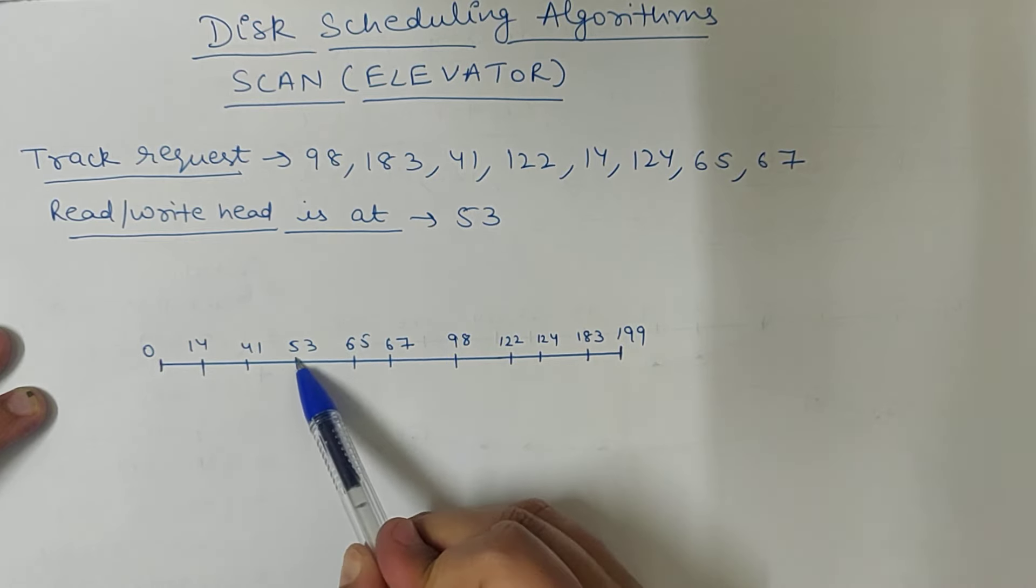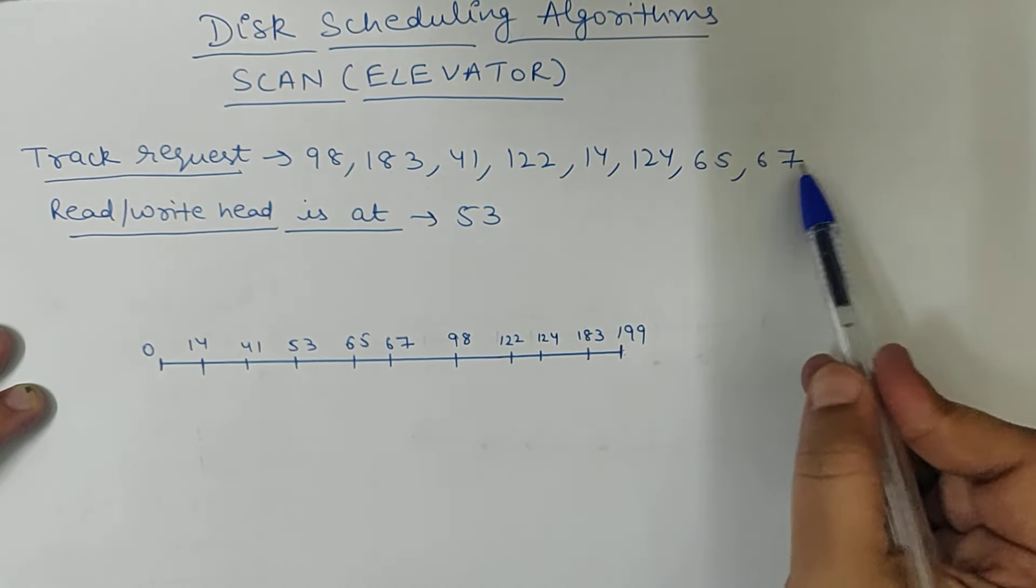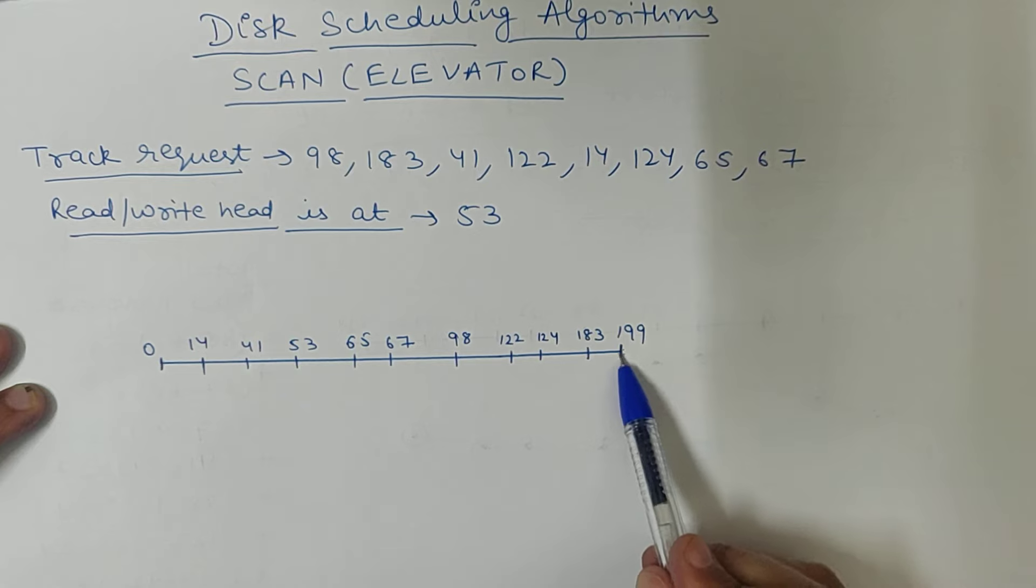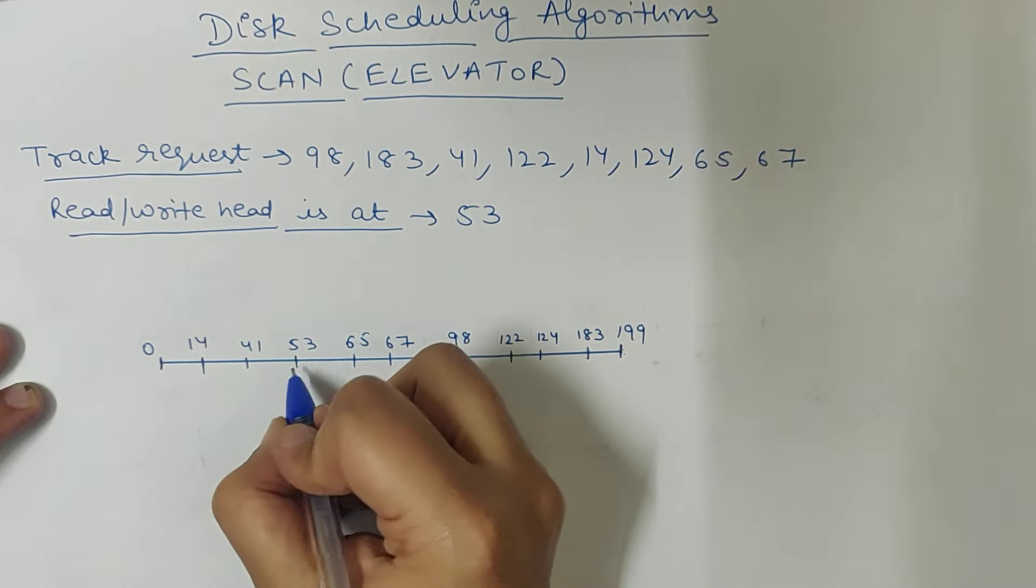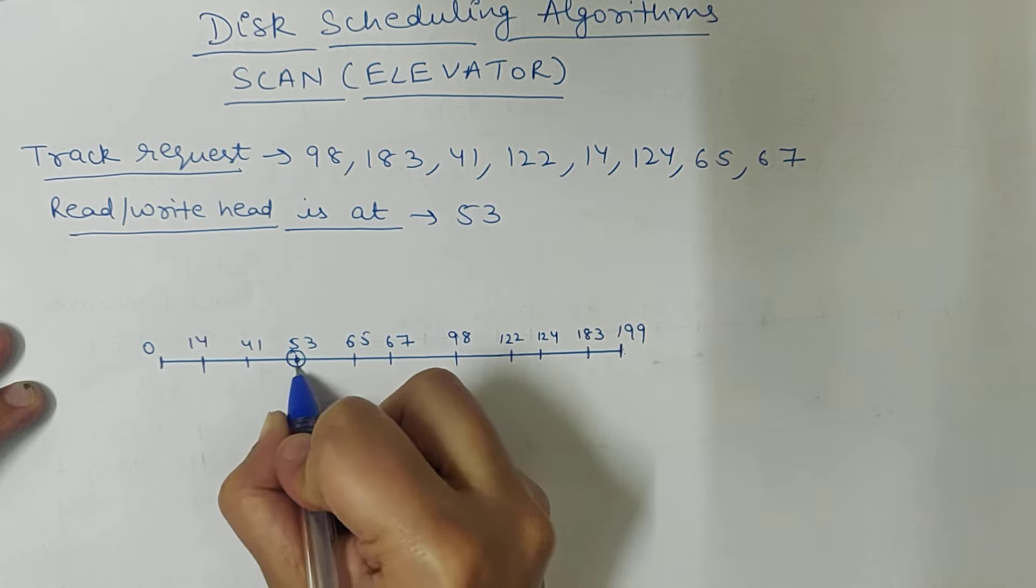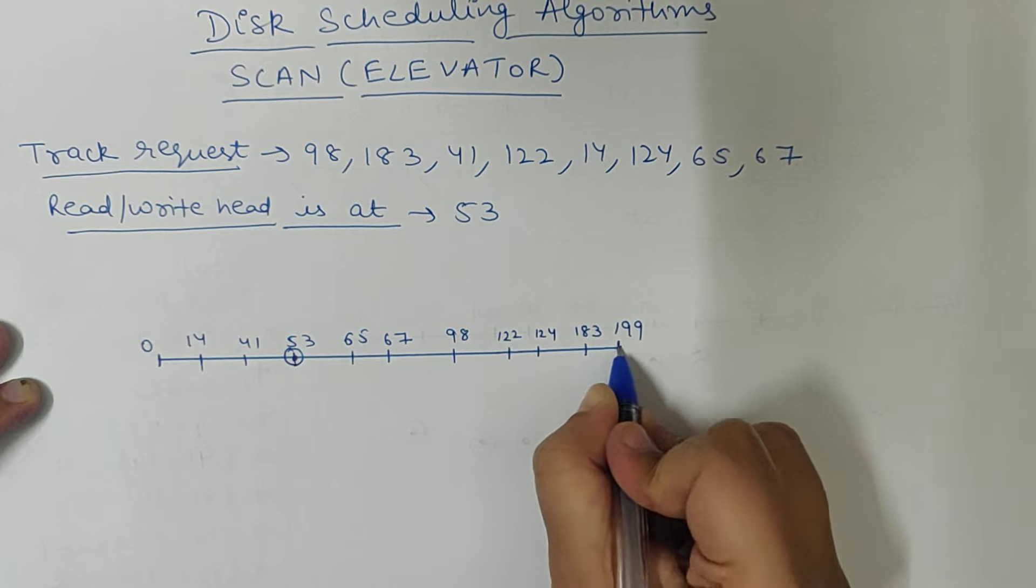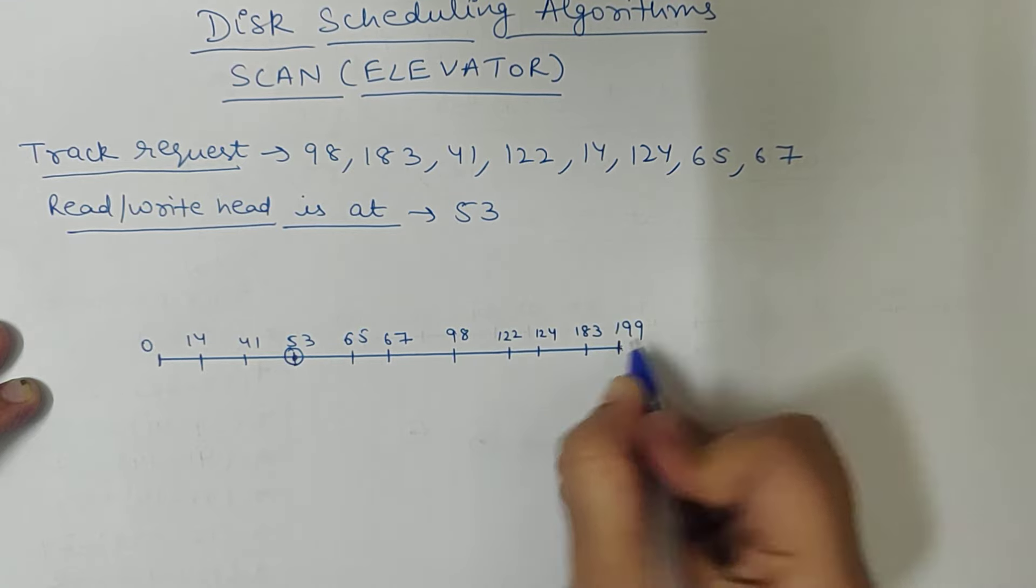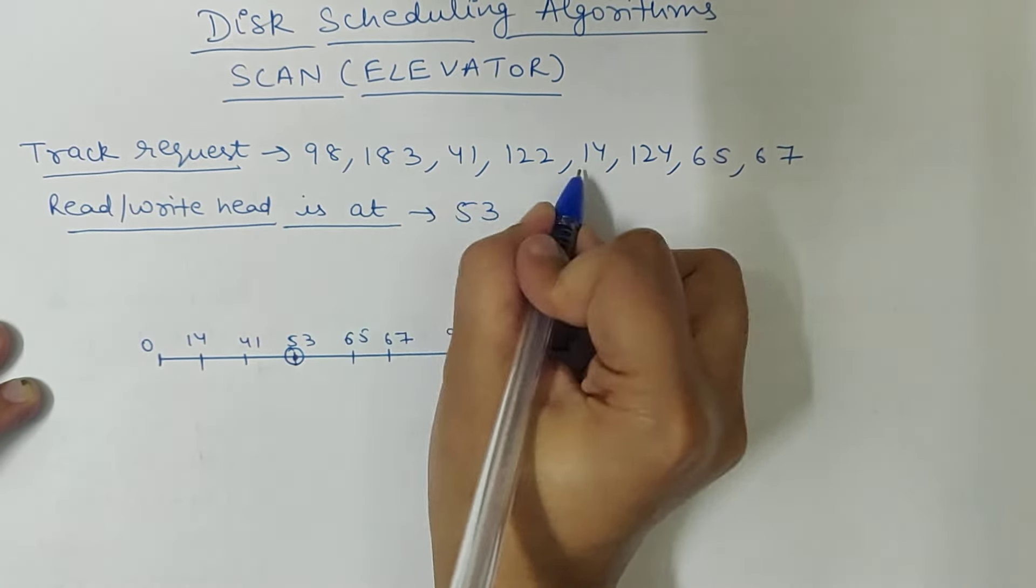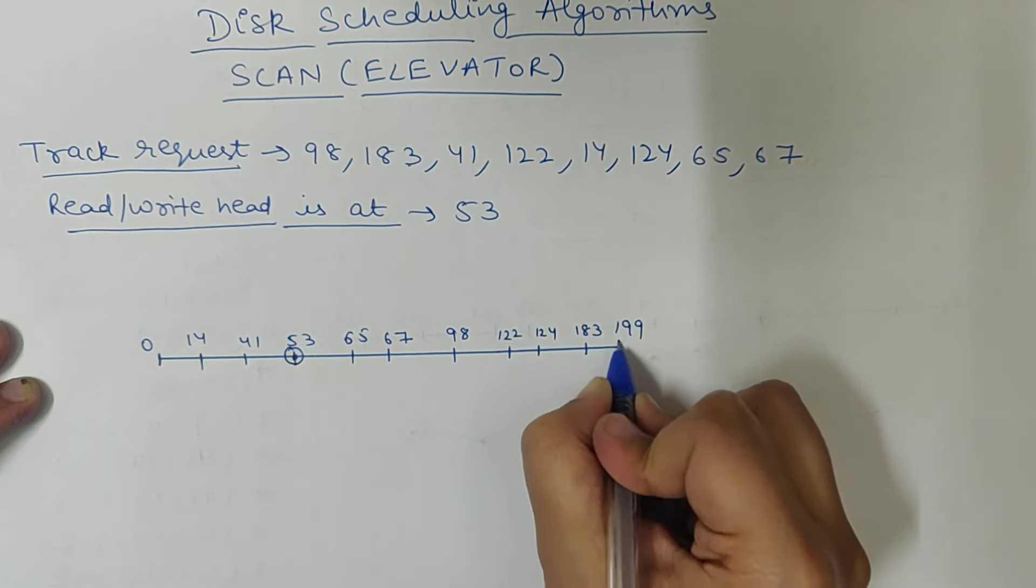Where your track is currently, we have to go to the end. We have to go to the last track. Currently our track is 53, so what we have to do is go to the end of the track. The end of the track is 183, but still, scan is the end of the track.